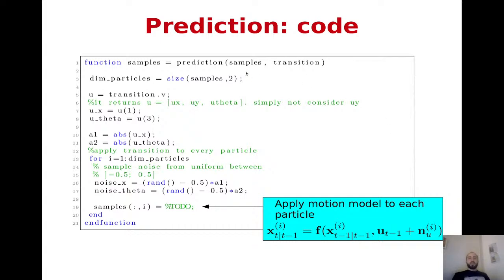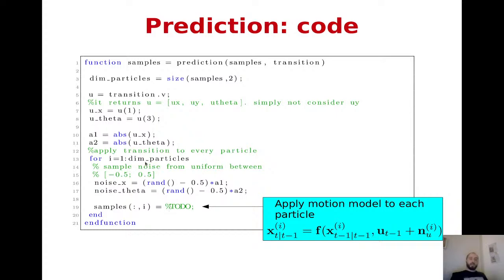In the prediction code, we take the set of samples representing particle locations. Inside the transition we find the velocity measurements — we take the dimension of the particles, take the velocities in absolute values, compute the noise sample for our controls, and update the particle location. We apply the motion model with the control sampled from the noise distribution, implementing exactly this formula — the same Euler integration of the unicycle model as in the Kalman filter.